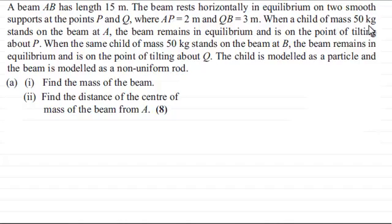When a child of mass 50 kilograms stands on the beam at A, the beam remains in equilibrium and is on the point of tilting about P. When the same child of mass 50 kilograms stands on the beam at B, the beam remains in equilibrium and is on the point of tilting about Q.